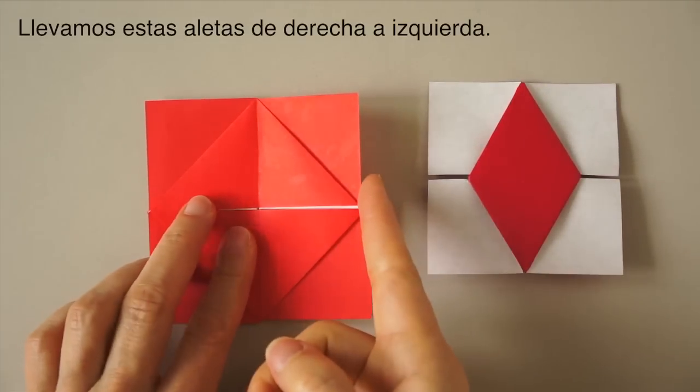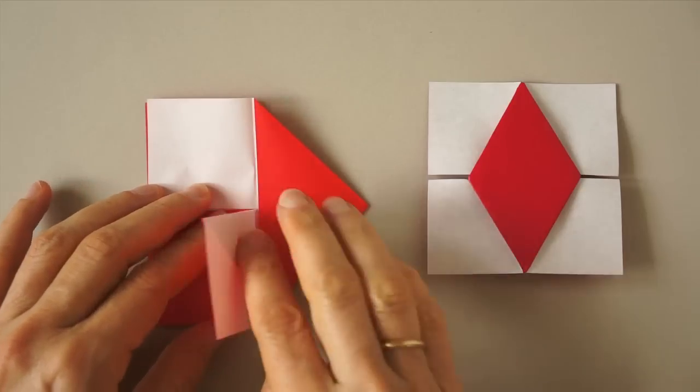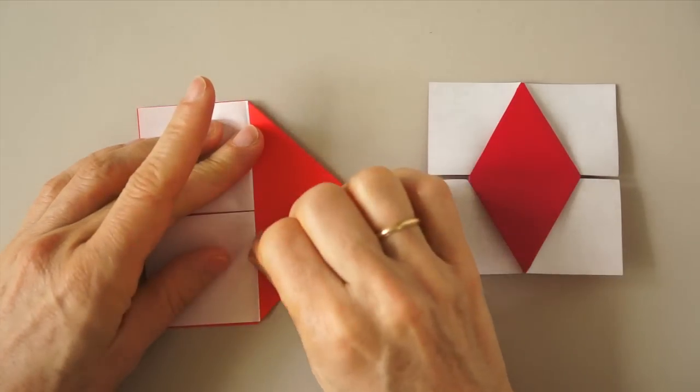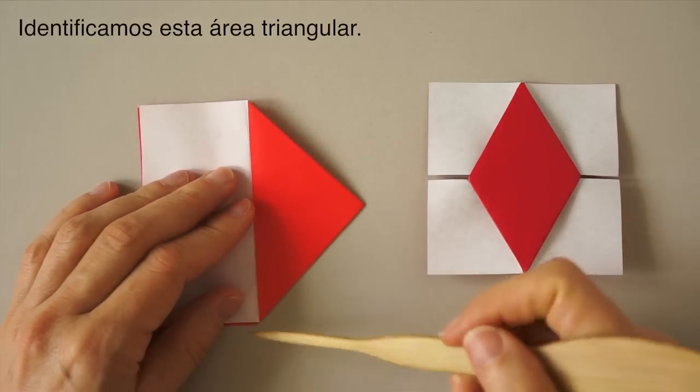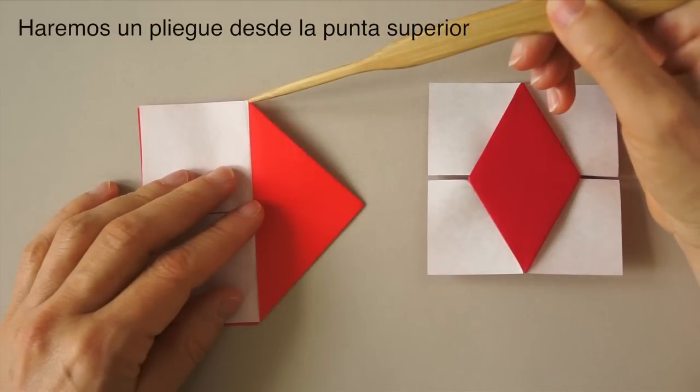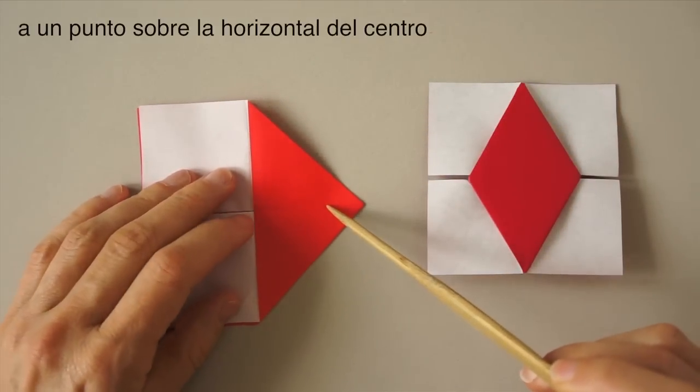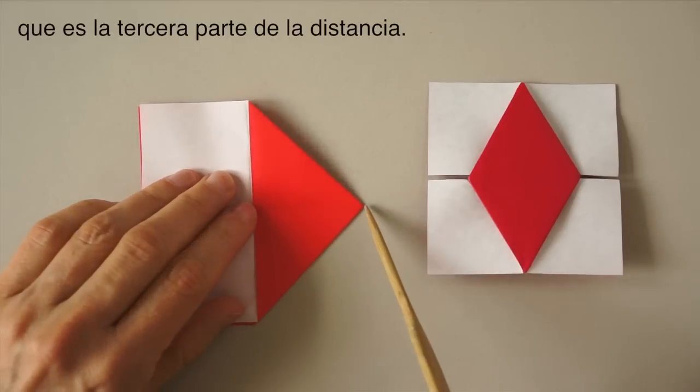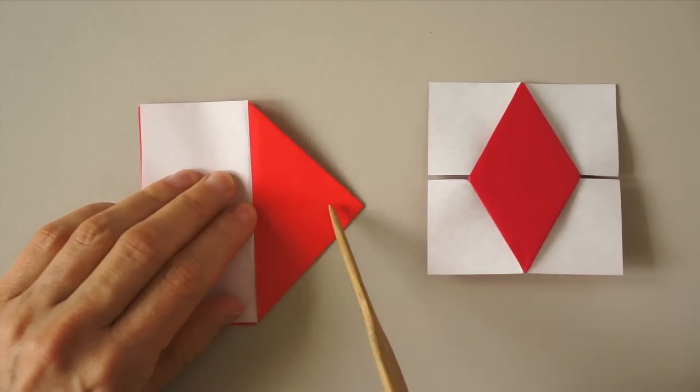Now, we're going to bring these flaps to the left. We have this triangular area here. We're going to create a fold that comes from this point to a point here, which is one-third of this distance. One, two, three. Right here.